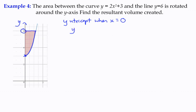So if the function is y equals 2x squared plus 3, and we're saying that x equals 0, then y equals 3. So we know that this point here is 3, and we know that we've got the point 6. And we're looking to rotate this shape around the y-axis.